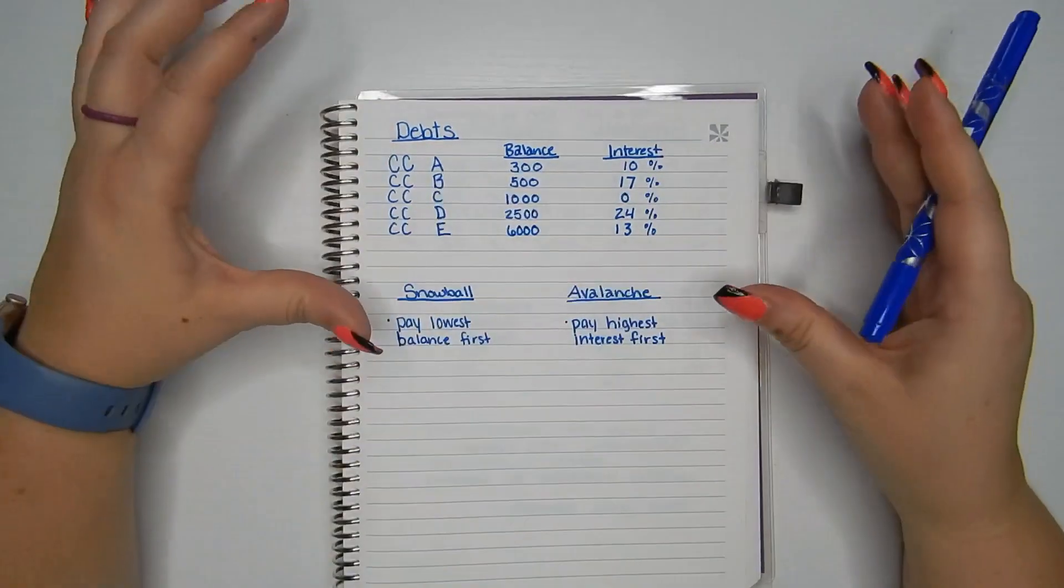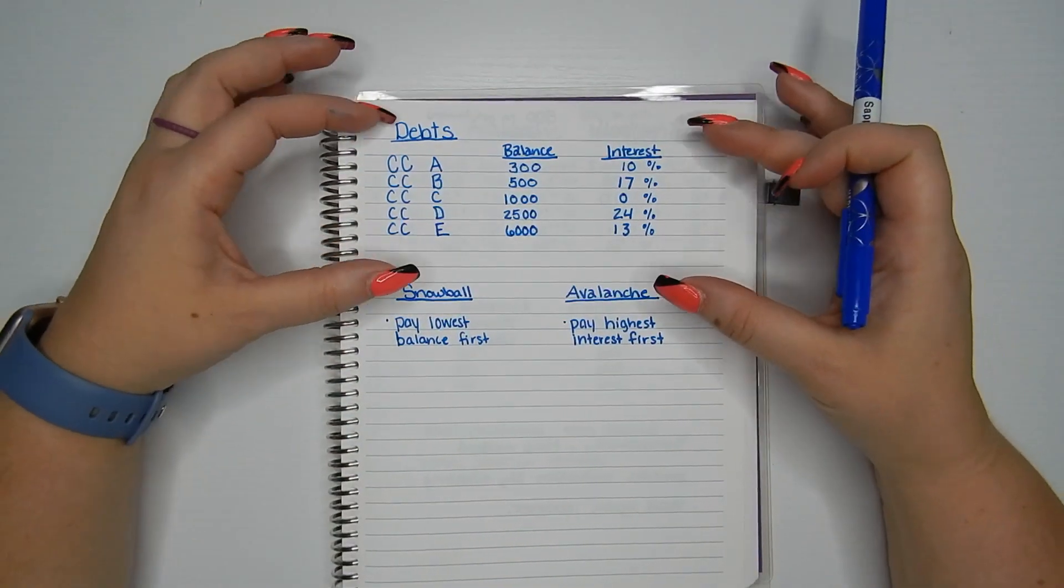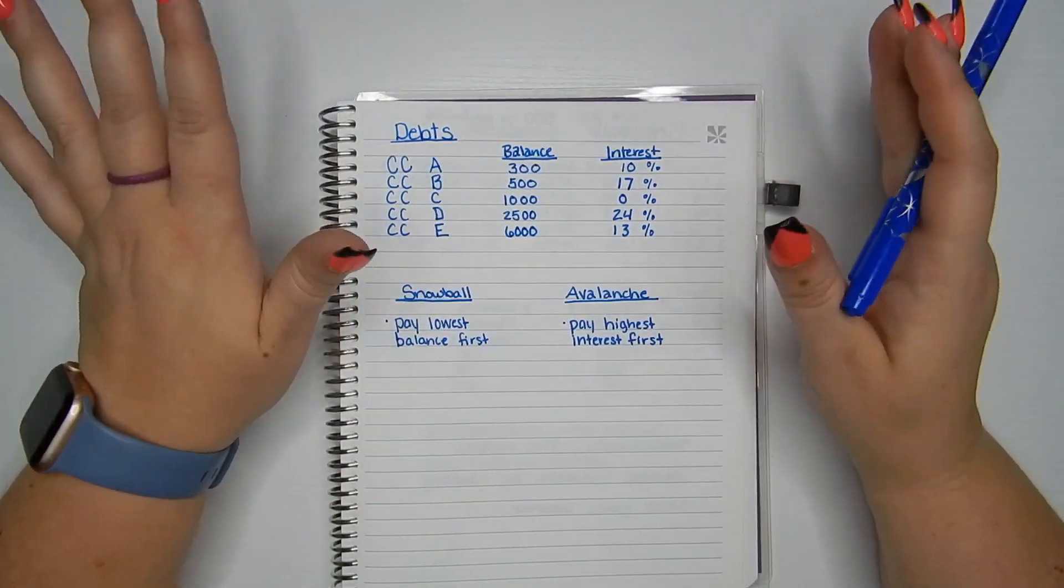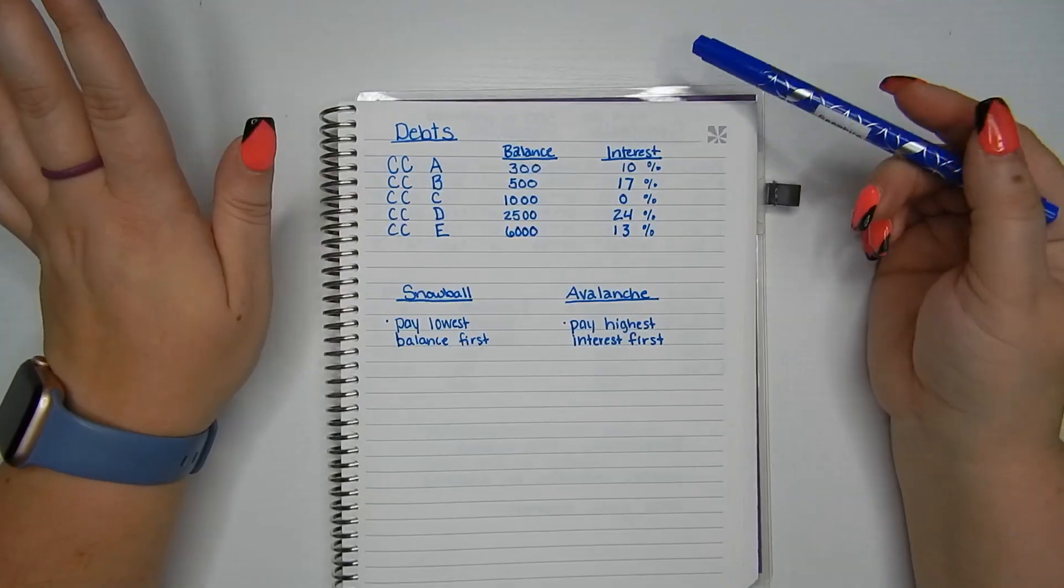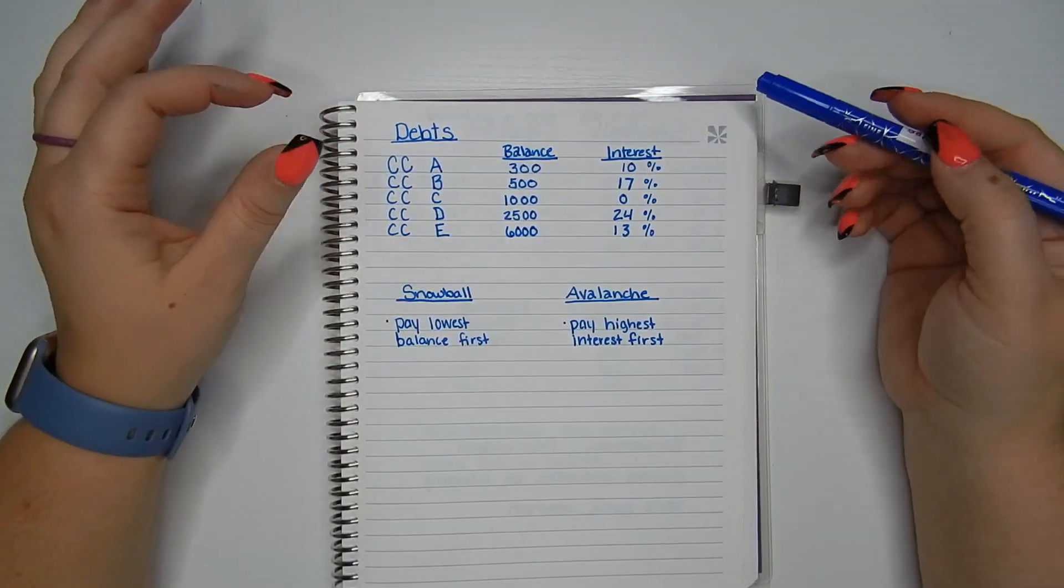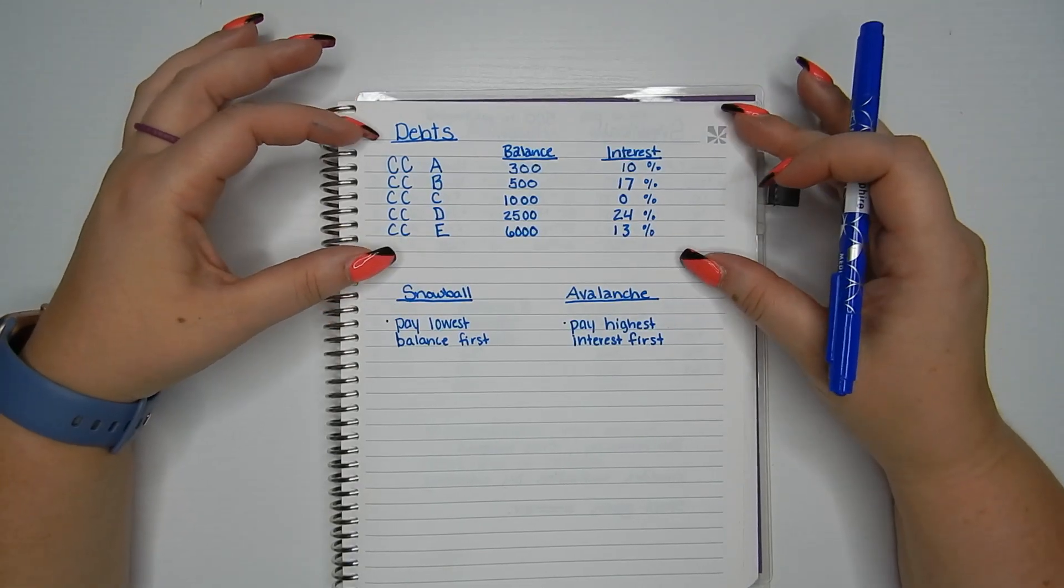So when you list out all your debts like this, this is where you want to start. List them all out, list their balances, and list the interest rates depending on which method you're using. I think this is a nice chart to kind of help you decide once you know what you want to do with both of them.